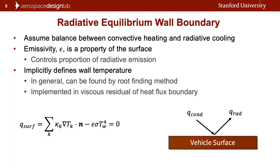A question was raised about the radiation formula: it only contains the fourth power of the wall temperature and not the free-stream external temperature. The speaker confirmed that the assumption made is that you are surrounded by a radiating background at effectively zero temperature relative to the wall, and that for a small radiating body this approximation is generally valid.